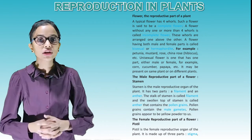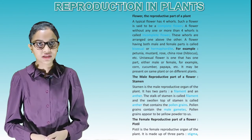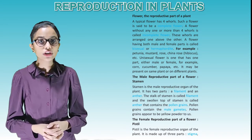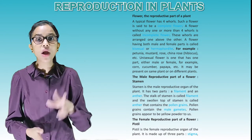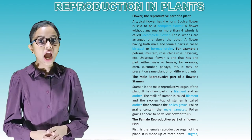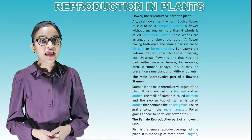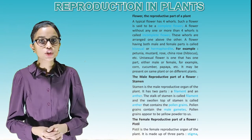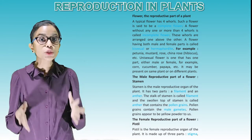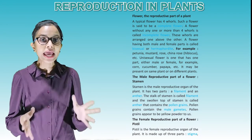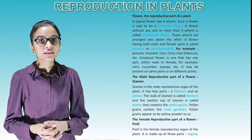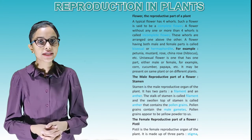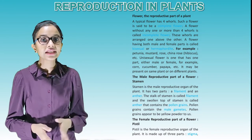The male reproductive part of a flower is the stamen. The stamen is the male reproductive organ of the plant and has two parts: a filament and an anther. The stalk of the stamen is called the filament, and the swollen top of the stamen is called the anther, which contains the pollen grains. Pollen grains contain the male gametes and appear as yellow powder.